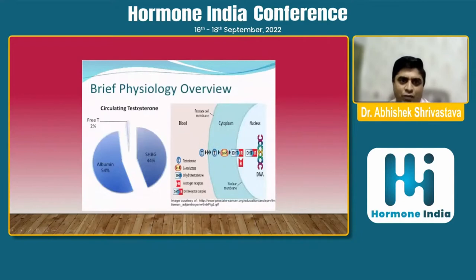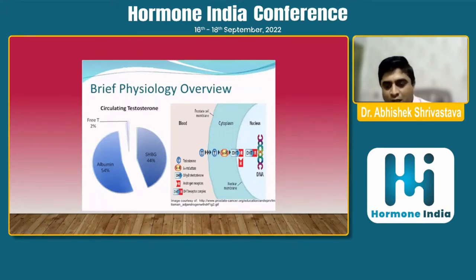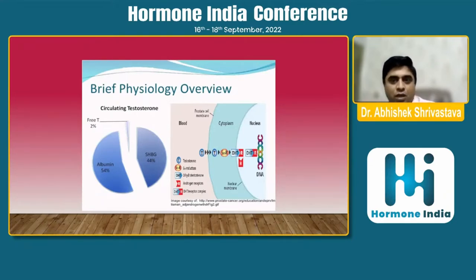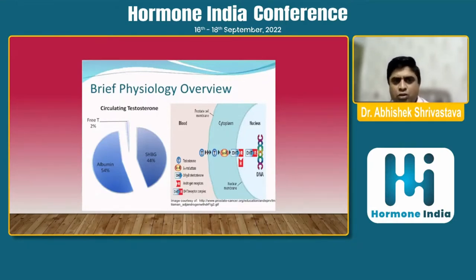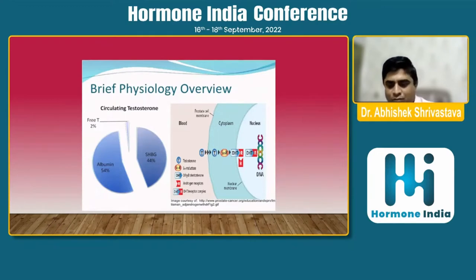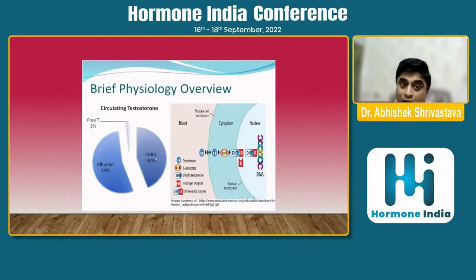Regarding free testosterone: the levels of free testosterone are actually very low, and it is this free testosterone which is bioavailable and actually exerts its actions at the cytoplasm and nuclear levels. About 50% of testosterone is bound to albumin, but not tightly bound, so we can consider that testosterone as free testosterone too. However, only 1 to 3% of bioavailable testosterone is actually of use. The rest is bound to sex hormone binding globulins, which constitutes total testosterone.